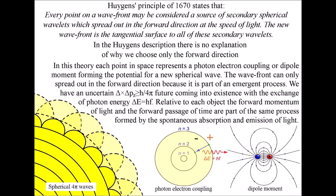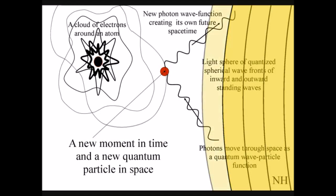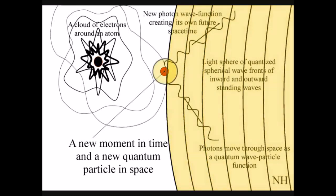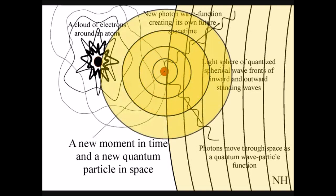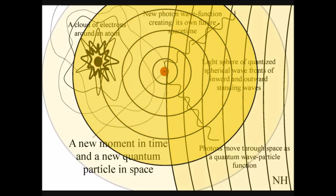Huygens principle states that every point on a wave front may be considered a source of a secondary spherical wave which spreads out in the forward direction at the speed of light. In Huygens' description there is no explanation of why we choose only the forward direction.